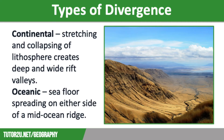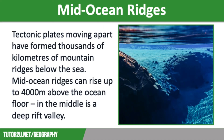The second type of divergence is oceanic, involving seafloor spreading on either side of a mid-ocean ridge, such as the Mid-Atlantic Ridge. Tectonic plates moving apart have formed thousands of kilometres of mountain ridges below the sea. These are broken up by transform faults, which are at right angles to the plate margins. When the faults widen, it can lead to friction and stress building up, resulting in shallow focus earthquakes.